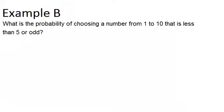In example B, it says: what is the probability of choosing a number from 1 to 10 that is less than 5 or odd? So we have two different events, and again we're thinking about OR — the probability that one happens or the other happens.